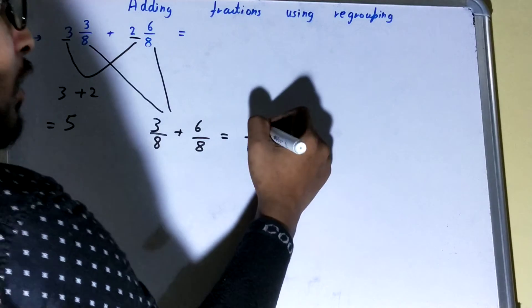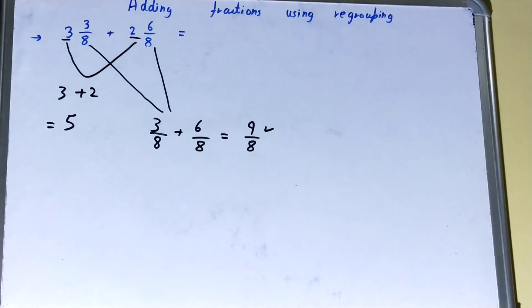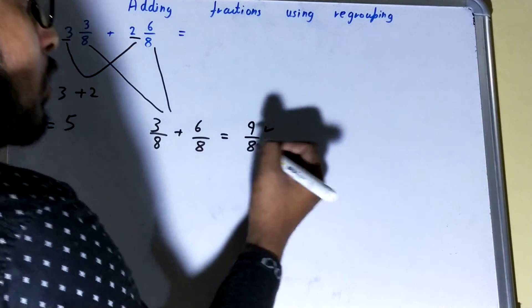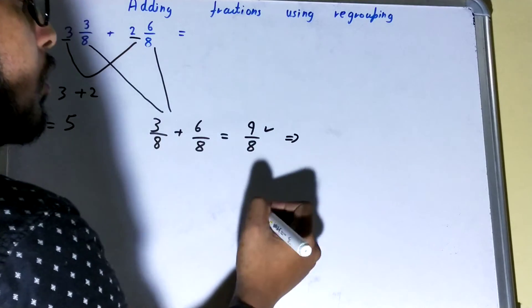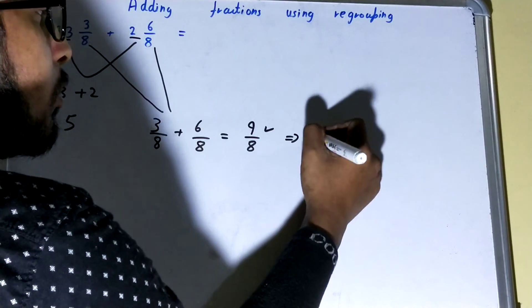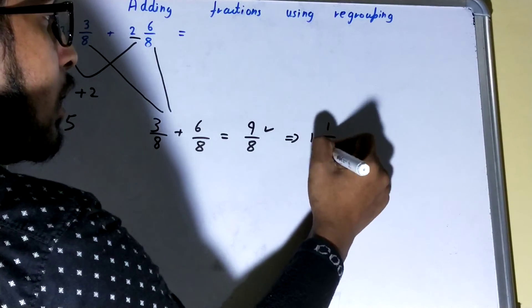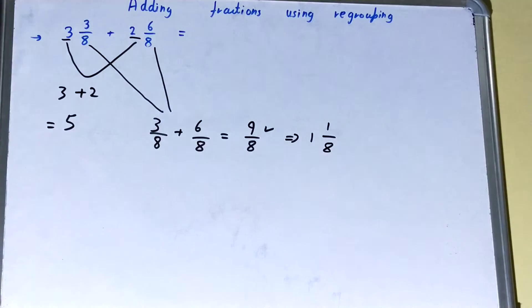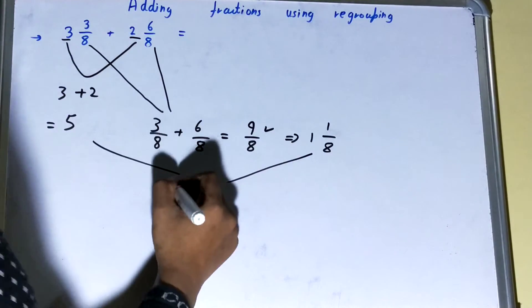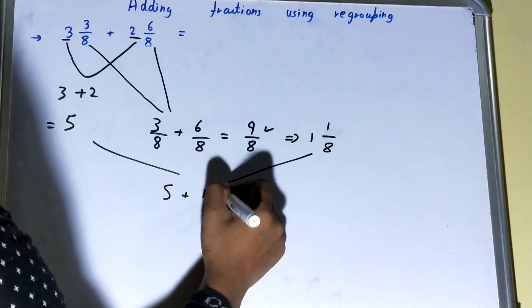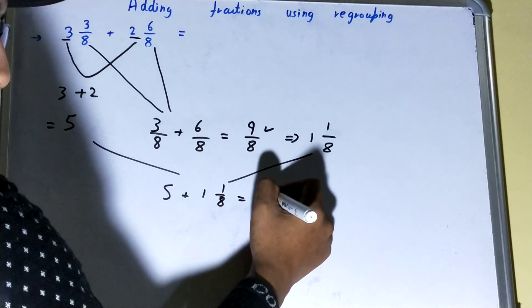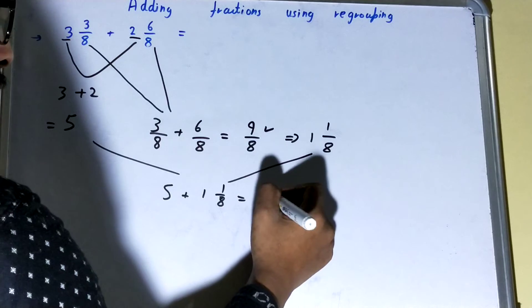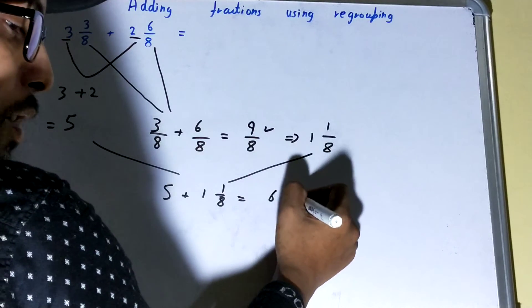Now you can see the numerator is greater than the denominator, so you need to change it to mixed fraction form. So it will be 1 1/8, right? And now you group these two, so 5 plus 1 1/8 will give you 6 1/8.